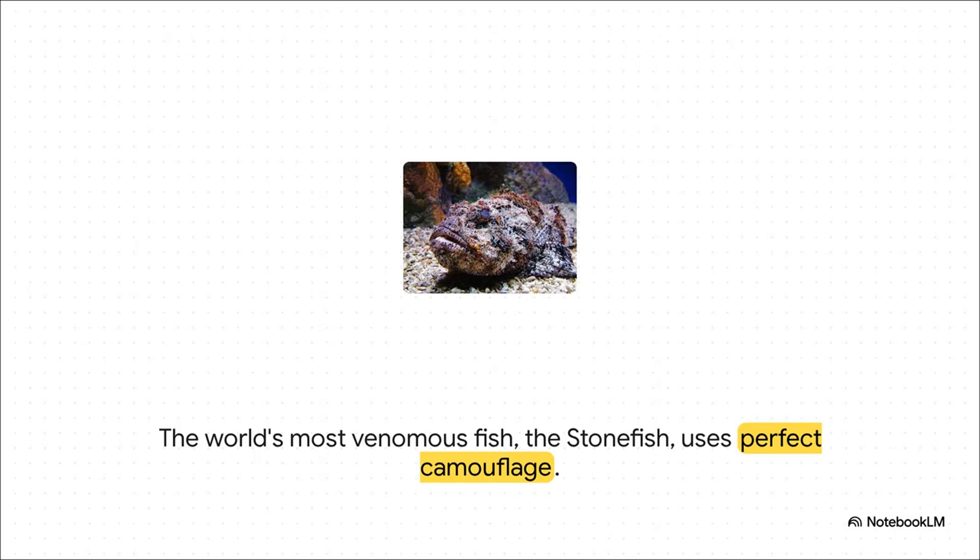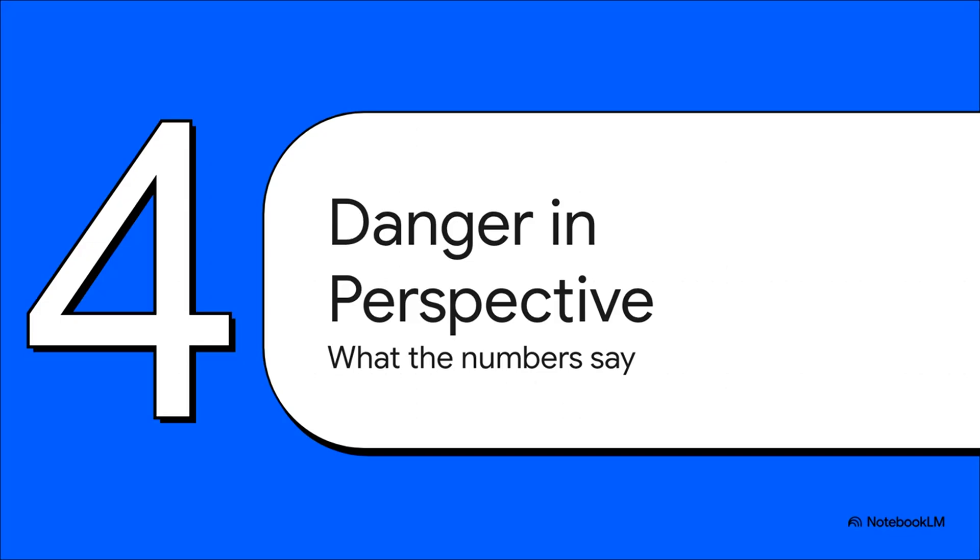Other creatures took a different route. Take the stonefish. It combined powerful venom with unbelievable camouflage. It's the world's most venomous fish, and it looks just like a rock on the seafloor. A master of disguise with a very painful, very defensive secret. So we've seen the science. We've seen the potent venom. It's all pretty intense. But what does this danger actually mean for people? Is the myth of a killer continent real? Let's look at the numbers and put all of this into perspective.